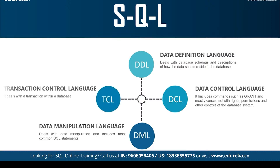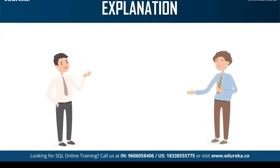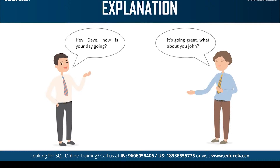The final command is TCL, that is Transaction Control Language. It allows you to deal with the transaction of the database. A few of the TCL commands are COMMIT, ROLLBACK, SAVEPOINT, and SET TRANSACTION. To understand SQL in a better way, let's use an analogy. If two people want to communicate with each other, they have to use a language understood by both of them. For example, John wants to start a conversation with Dave and uses the English language, which is known to Dave as well, so they continue their conversation.